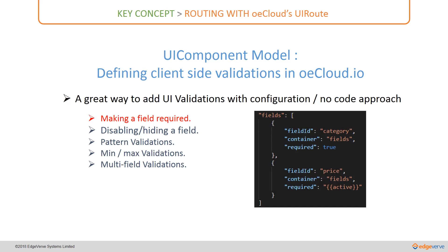Let us look at making a field required. In the UI component model there is a section called 'fields', which contains a field ID — the name of the property from the model — and the container where it should be rendered. This is where you introduce a UI level validation by setting 'required' to true. So while developing the UI component, in the fields section you have a field ID for which you set the required property to true.